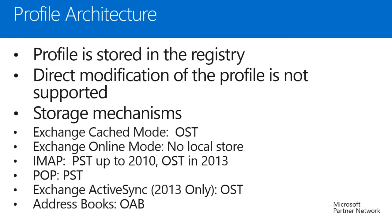POP accounts use a PST in all versions of Outlook, and Exchange ActiveSync accounts — which are specific to Outlook 2013 — also use an OST. An example of an Exchange ActiveSync account would be an internet mail account such as Hotmail. There are also local files within the Windows NT profile for address books, represented in the case of exchange using OAB files.